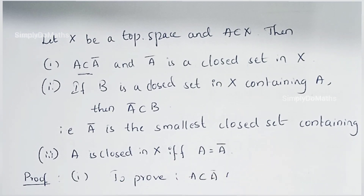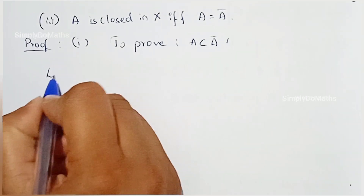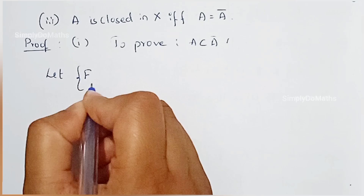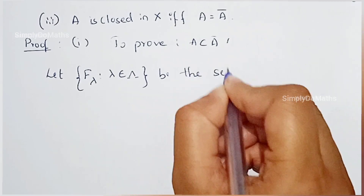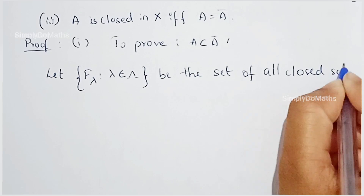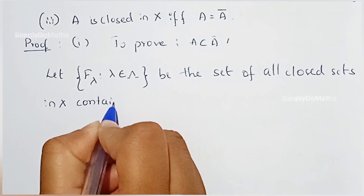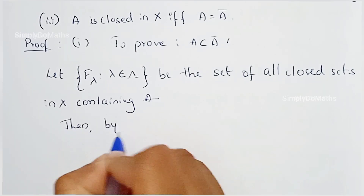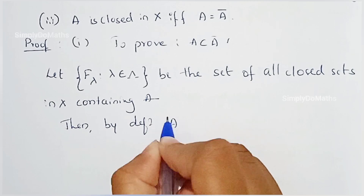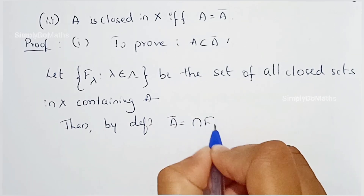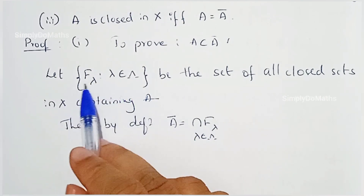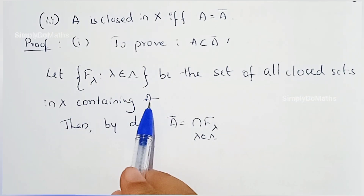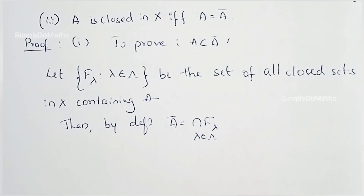Let's prove these. For the first property, we need to prove A is a subset of Ā. Let the family {F_λ}, where λ belongs to the index set, be the set of all closed sets in X containing A. The intersection of this family gives the closure, so intersection of F_λ equals Ā.